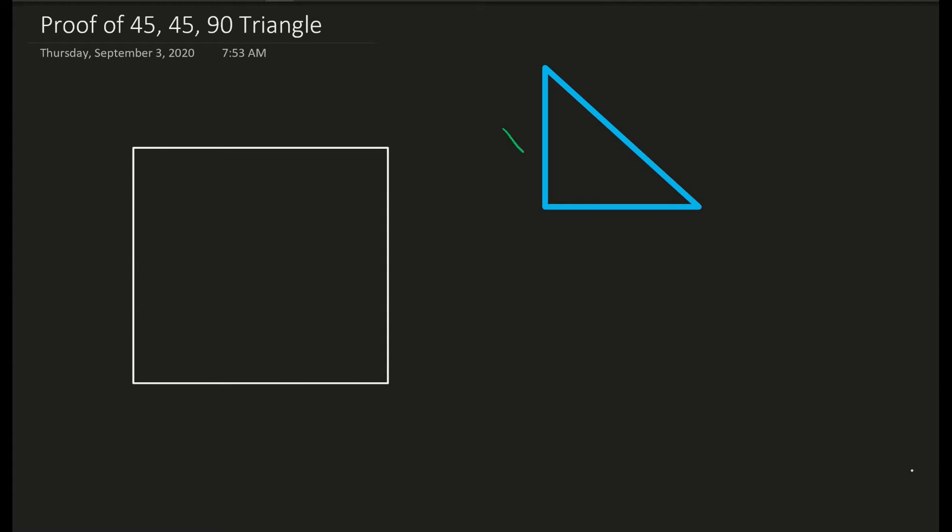So the rule is x, x, and x square root 2. You've seen that whenever you have a 45-45-90 triangle. The purpose of this video, hopefully, is to shed some light on why these values or why this rule is written the way that it is.